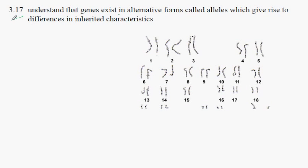IGCSE Biology, Syllabus Statement 3.17: Understanding that genes exist in alternative forms called alleles and this gives rise to differences in the inherited characteristic.